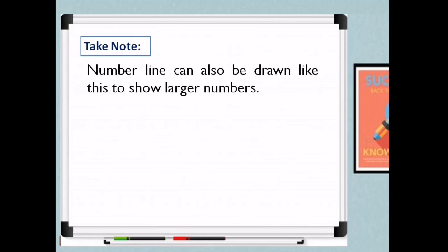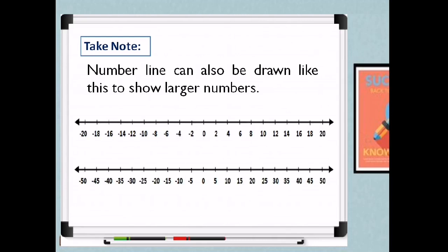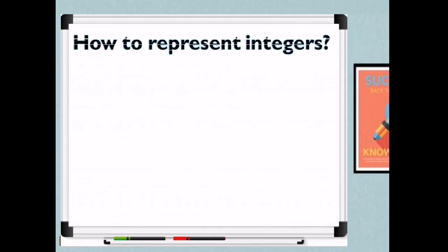Take note: a number line can also be drawn to show larger numbers. When there are large integers, we can use a larger number line, but make sure the positive and negative integers are balanced — the same distance on each side. We can count by 2s or by 10s, etc.